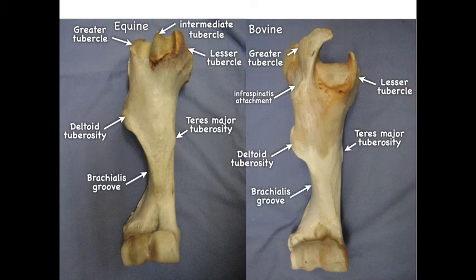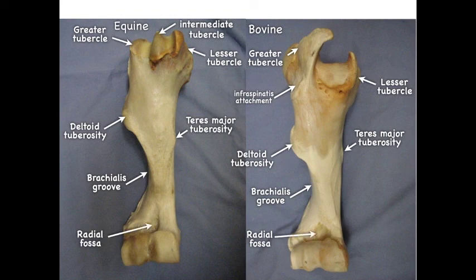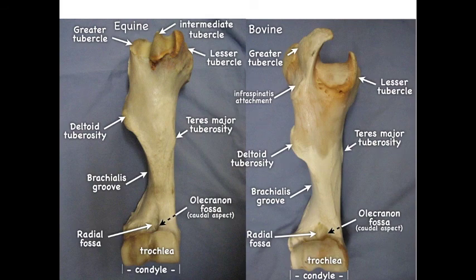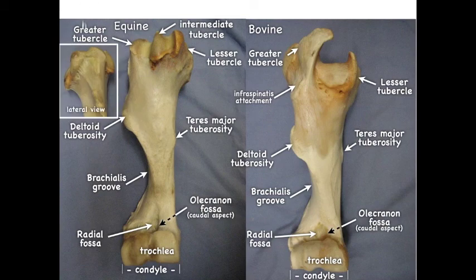The brachialis groove is nice and prominent here — that's where the brachialis muscle runs. There's the radial fossa, and on the caudal side we have the olecranon fossa. Distally, the articular surface includes the trochlea, which is the major portion of the condyle, and the capitulum is the more lateral portion. Because we do not see it from this cranial view, I'll show you the lateral view so we can see the head — the head is mostly caudal in orientation.